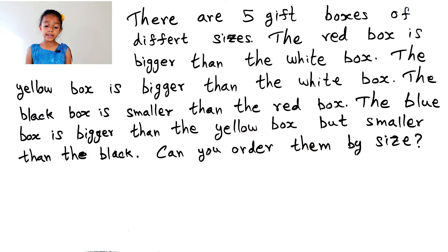So the red box is the biggest, the black box is the second biggest, the blue box is the middle, the yellow box is the second smallest, and the white box is the smallest.